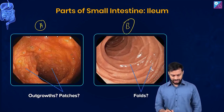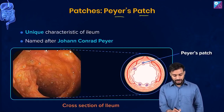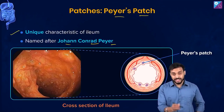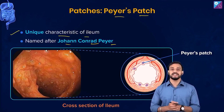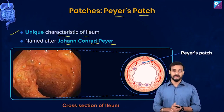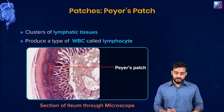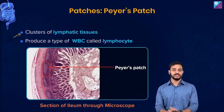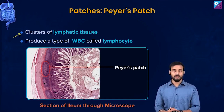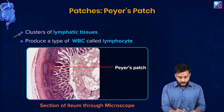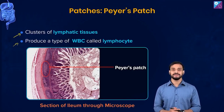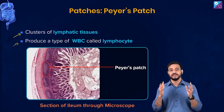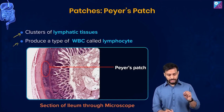Now let's talk about what these patches actually are. These are Peyer's patches, named after John Conrad Peyer. Note it down — Peyer's patches are a unique characteristic of the ileum in the small intestine. These are nothing but clusters of lymphatic tissue, and they produce a type of white blood cell called the lymphocyte. So they are a very important part of the immune response.